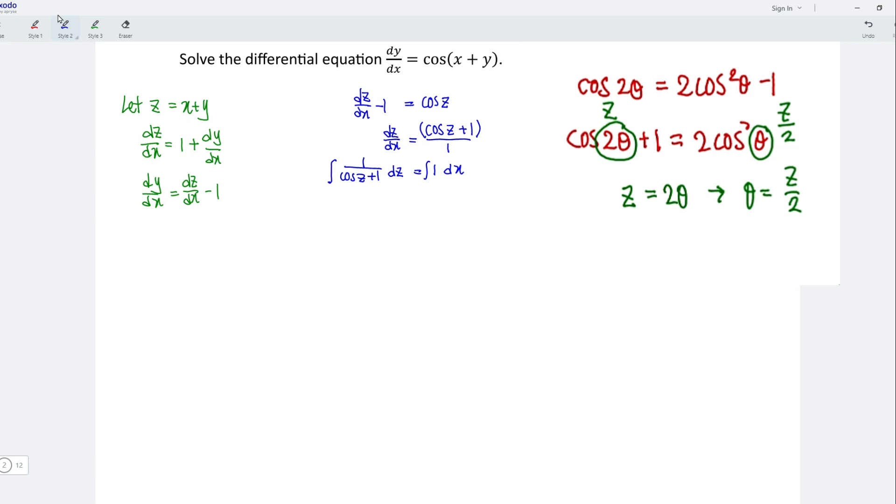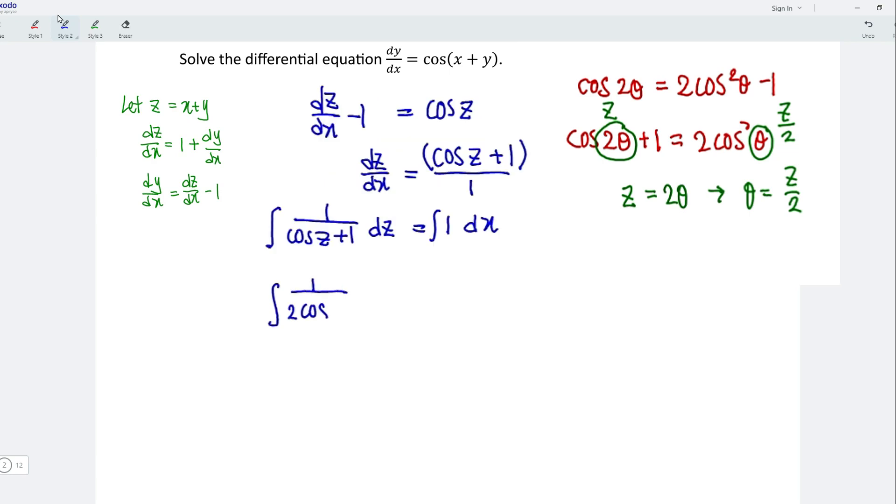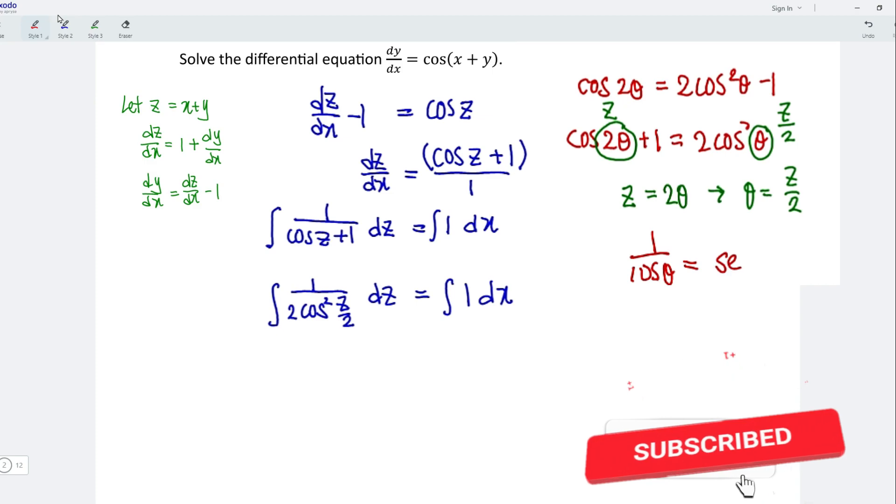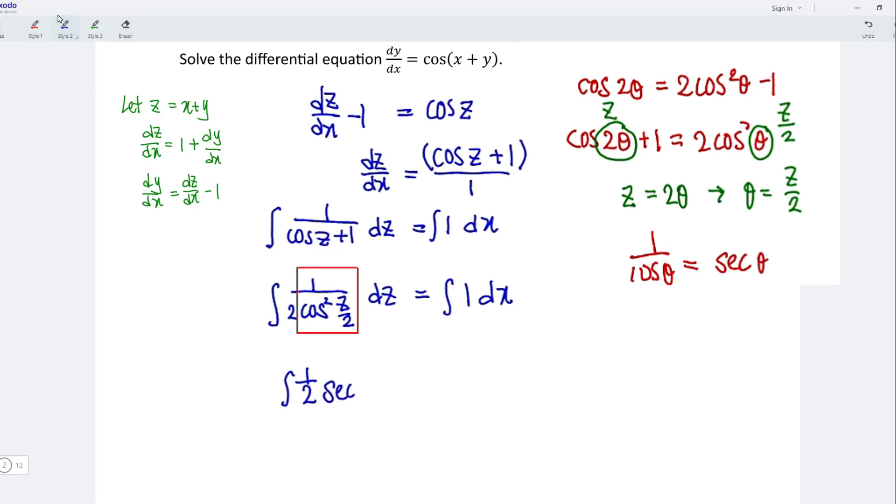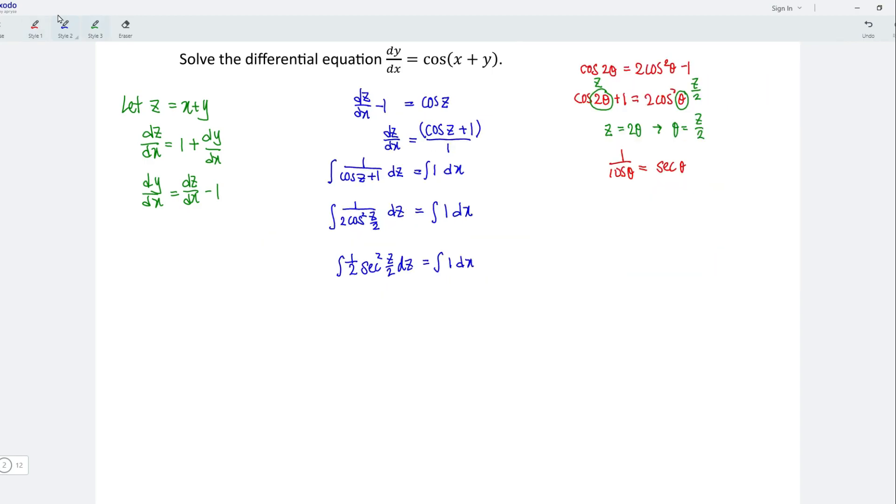And now rewrite the equation. So we have integrate 1 over 2 cos square z over 2 dz equals integrate 1 dx. Recall that 1 over cos theta equals secant theta. Which means we should have integrate 1 over 2 secant square z over 2 dz equals integrate 1 dx. And now we should be able to integrate both sides.